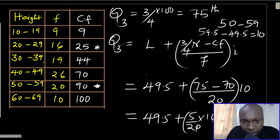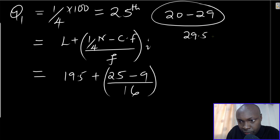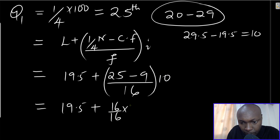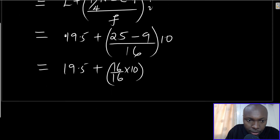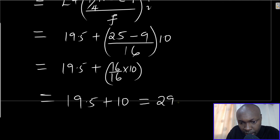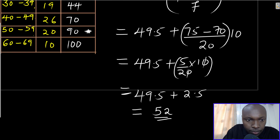The frequency of the class 20–29 is 16, and the class size is 29.5 - 19.5 = 10. So Q1 = 19.5 + [(25 - 9) / 16] × 10 = 19.5 + [16/16] × 10 = 19.5 + 10 = 29.5. So the lower quartile Q1 = 29.5.